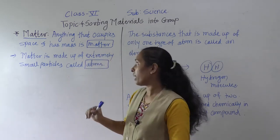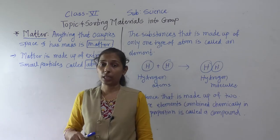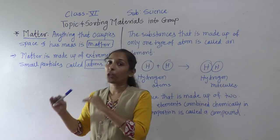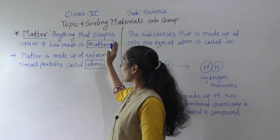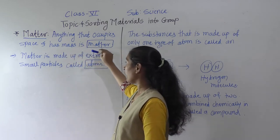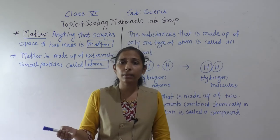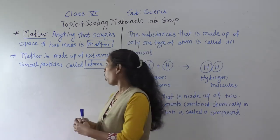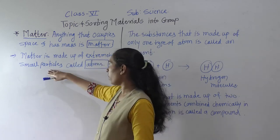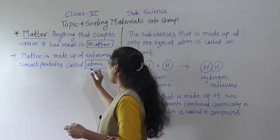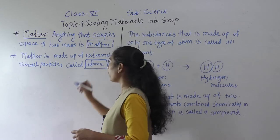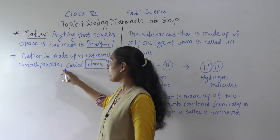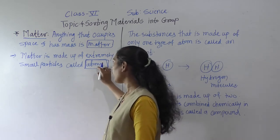Now, material is made up of matter. But how is matter itself made? From which things is matter made? The matter is made up of extremely small particles called atoms.